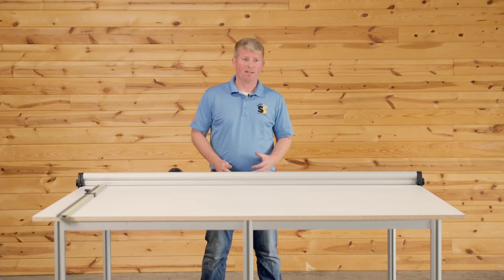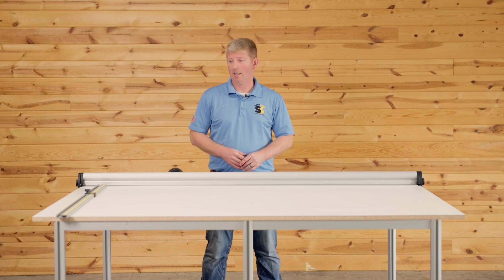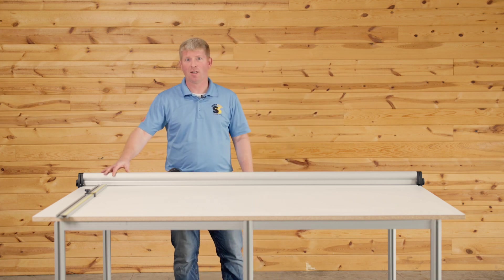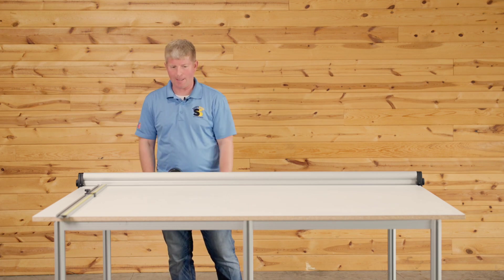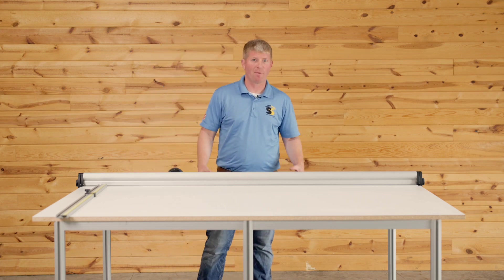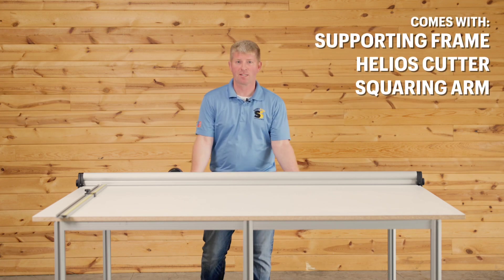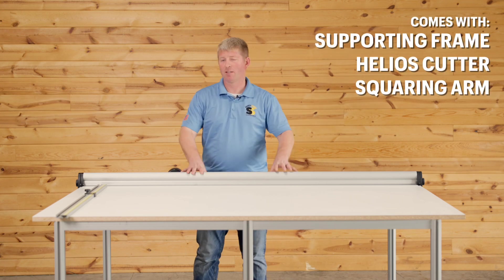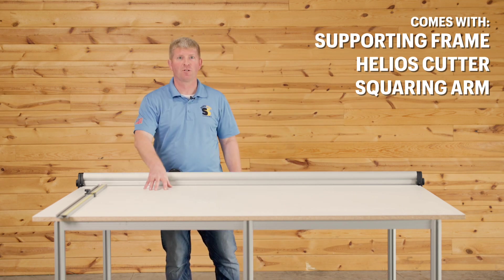The Triton cutting system is a solution if you have no work table, need a squaring arm to line up cuts that have crosshairs on an image. That'll help you square it up against that bar, make your cut, and also compact size. This unit comes with the supporting frame for the table underneath, the Helios cutter, and the squaring arm. All you have to provide is the work surface.